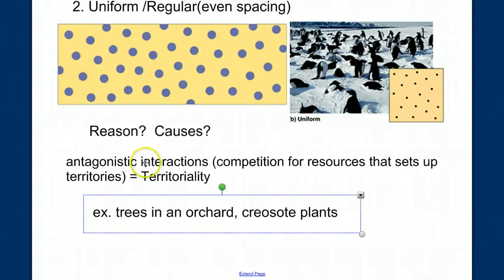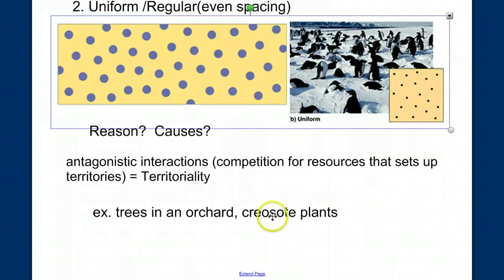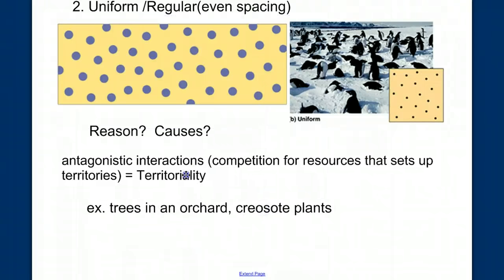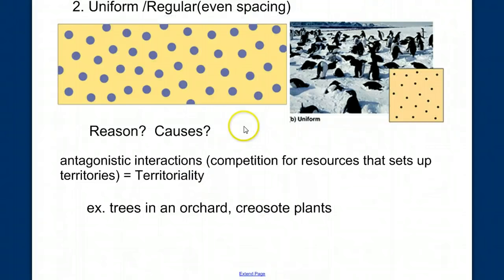Some examples would be like trees in an orchard, or these penguins, or the creosote plant. It does something very interesting. If you flew over an area where there are a lot of creosote plants, it might look like this picture here. It's almost as if the other creosote plants know not to encroach on each other's area. But what happens is the creosote plants secrete an oil that, when it drops to the ground, prevents any seeds in that area from germinating, thus carving out space for itself.